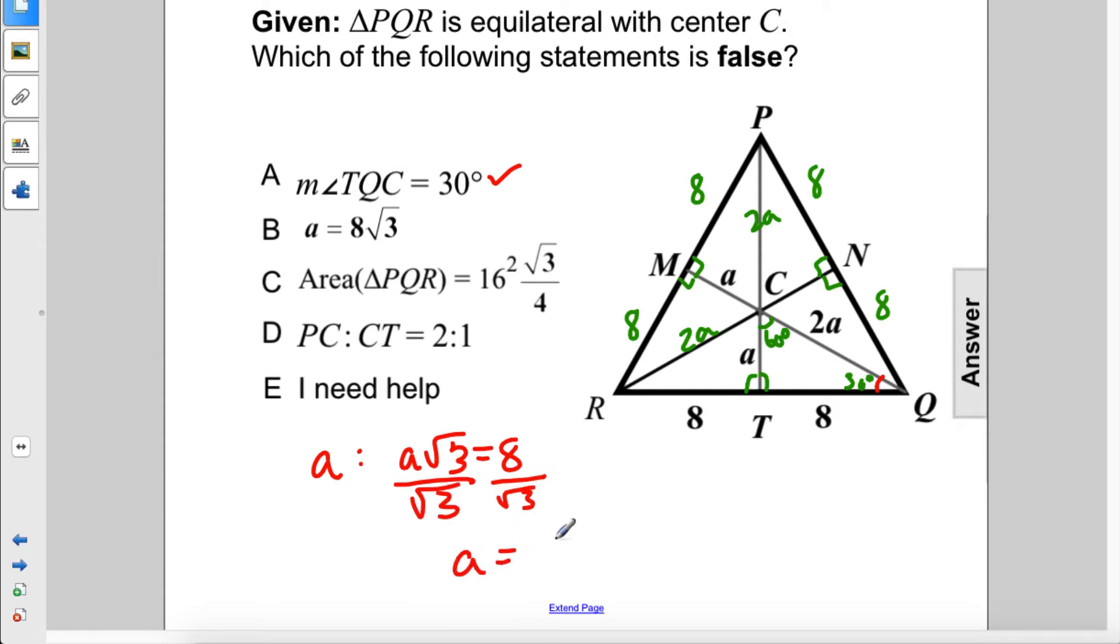We get A equals 8 times the square root over the square root of 3. We'll multiply this by 1, like that, to cancel out in the denominator. We get 3 down there. So that becomes 8 over 3 times the square root of 3. So this is false. This should be over 3. So this is our answer to this problem.